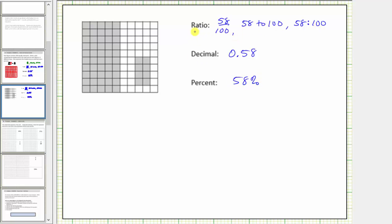Again, we can simplify a ratio just like a fraction, expressing the ratio of shaded area to total area using larger parts. Recognizing that 58 and 100 share a common factor of 2, we can create an equivalent ratio by dividing numerator and denominator by 2. This gives us 29/50, or a ratio of 29 to 50, which means we can express this area by dividing the 10 by 10 grid into 50 equally sized parts, 29 of which would be shaded.